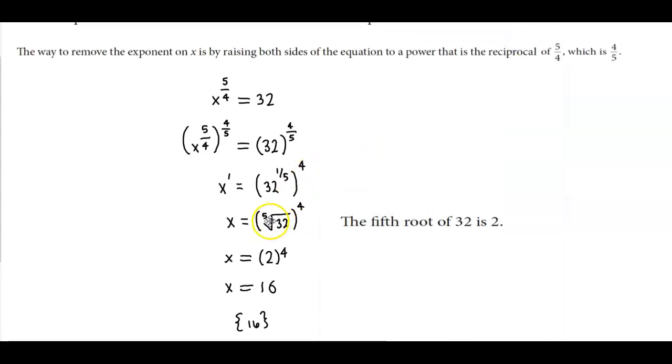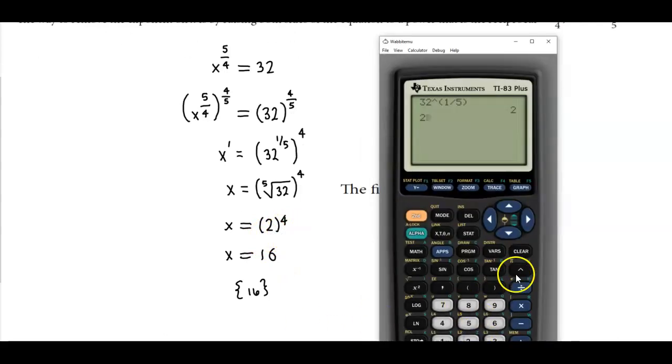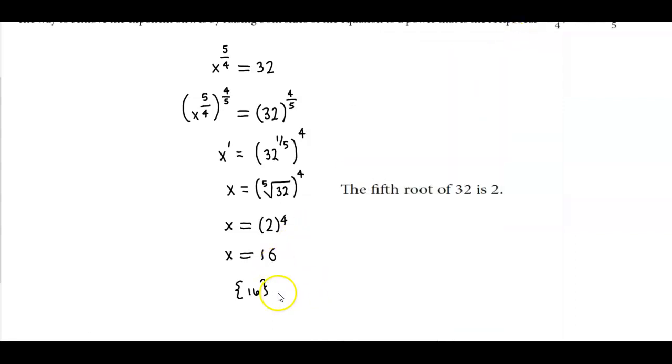So we can see that the fifth root of 32 gives you 2 and that's raised to the fourth power. And 2 to the fourth power gives us 16. So the solution is 16.